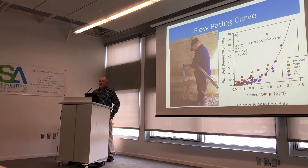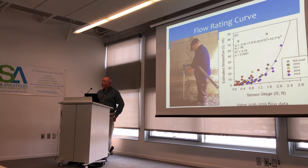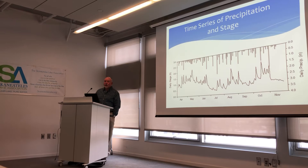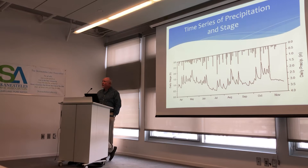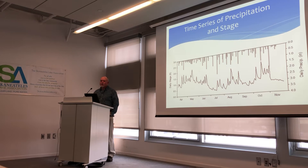We got a really nice fit in 2019. This is the data for the four-year record. For this stream we have a pretty good idea of what the flow to Skaneateles Lake is, which allows us to calculate loads when we have concentration data. This time series from 2019 shows the stage or flow with daily precipitation data. With four years of this type of data, we have a really good understanding of how Shotwell responds to precipitation, both on a daily basis and seasonally.